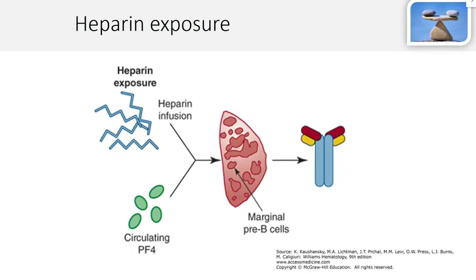Heparin-induced thrombocytopenia begins with heparin exposure. It's an antigenic adverse reaction to heparin that's quite rare but important. When a patient is first exposed to heparin, the body develops antibodies in combination with circulating platelet factor IV. The combination of heparin and platelet factor IV is recognized by the immune system and leads to IgG antibody production — bypassing the normal IgM-to-IgG class switch — with antibody development occurring in five to ten days, much shorter than seen for other conditions.